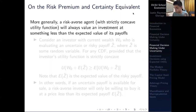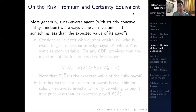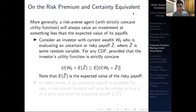More generally, a risk averse agent — and we said that this risk averse agent generally has a strictly concave utility function — will always value an investment at something less than the expected value of its payoffs.